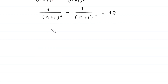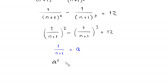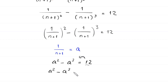This expression can be written as 1/(n + 1)² minus 1/(n + 1)³ equals 12. We now suppose that 1 divided by (n + 1) equals a, so the equation becomes a² minus a³ equals 12. Moving 12 to the left-hand side gives a² minus a³ minus 12 equals 0.